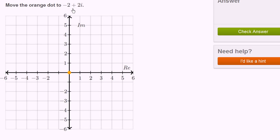Move the orange dot to negative 2 plus 2i. So we have a complex number here. It has a real part, negative 2, and an imaginary part, 2 times i.